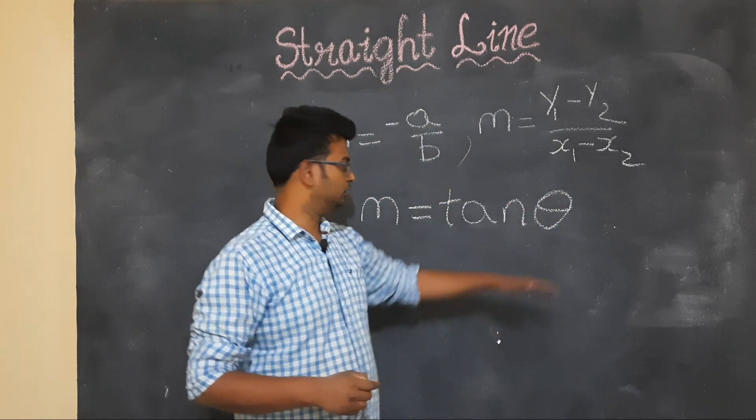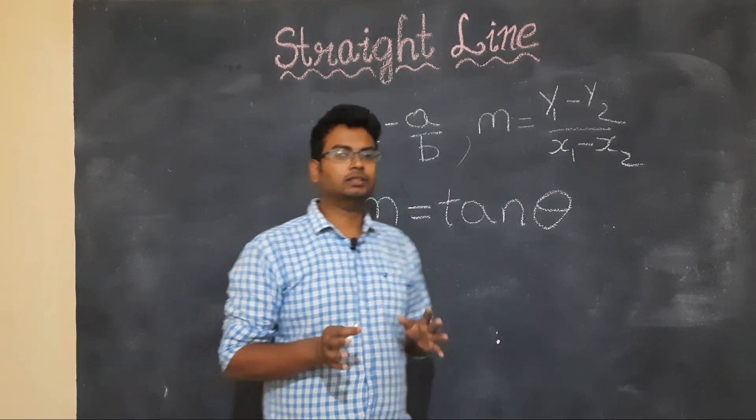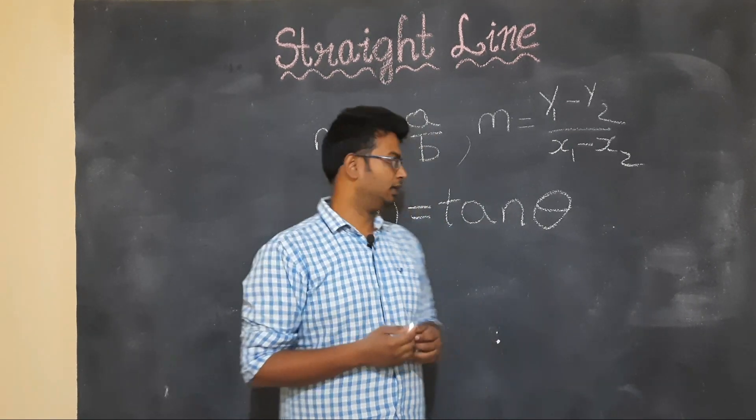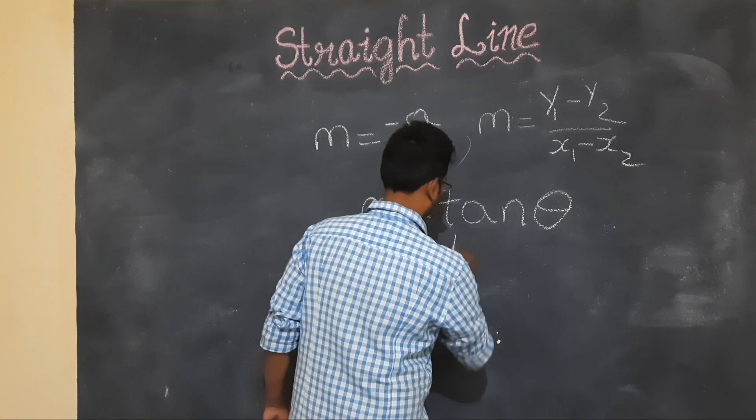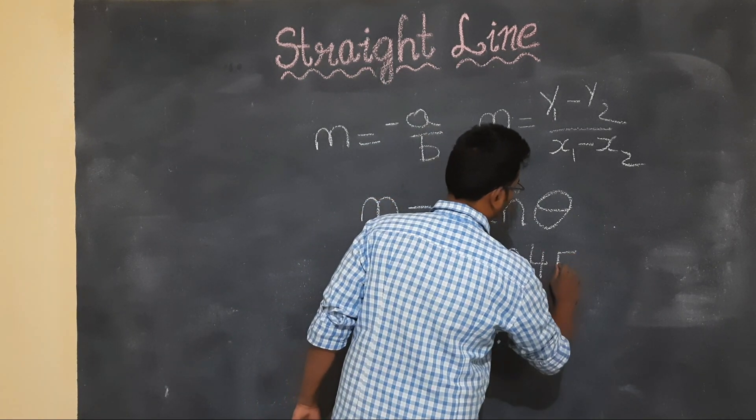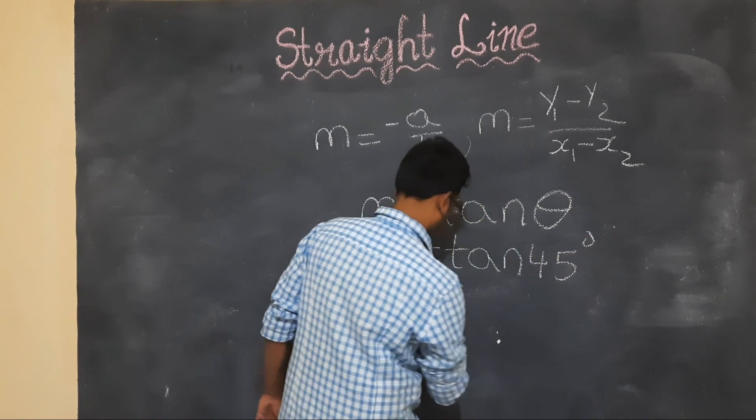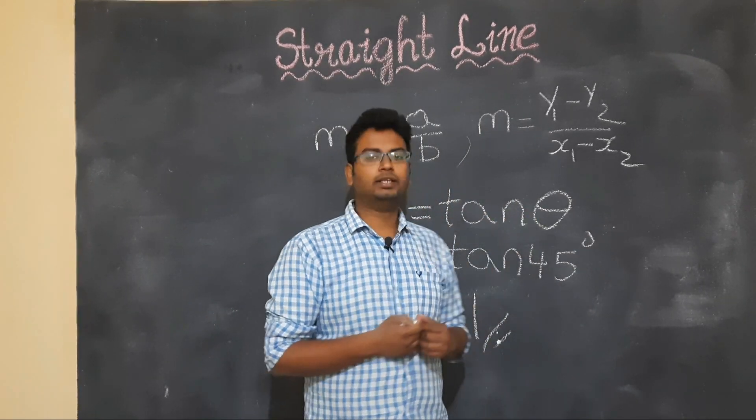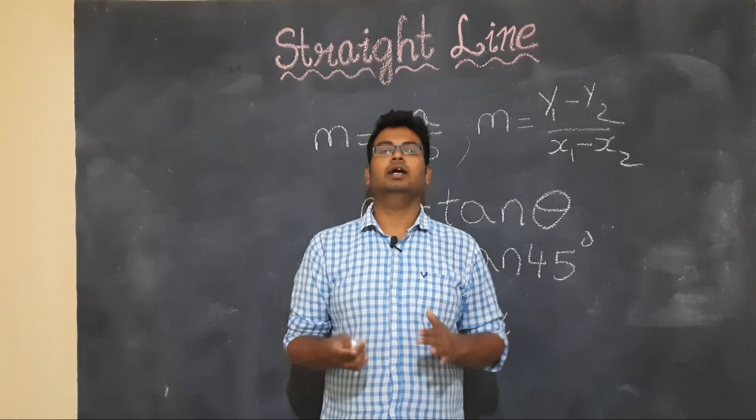Clear students? Like find the slope of a line making an angle of 45 degrees. So tan 45 is 1, so the slope is 1.